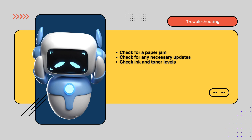Your printer is acting up and not printing things correctly. How frustrating. Let's investigate. Is this a hardware issue like a paper jam, or a software problem like outdated drivers? If it's hardware, carefully check for any stuck paper and clear it out. For software, we may need to update the printer drivers or adjust some settings. And don't forget to check those ink or toner levels.